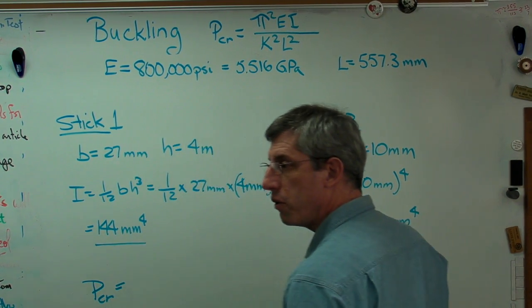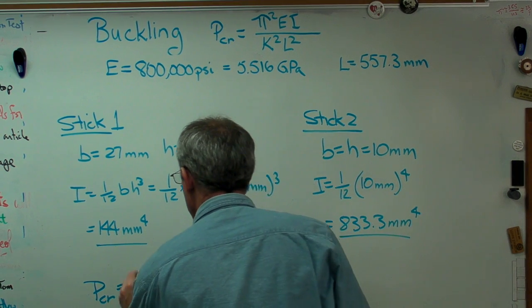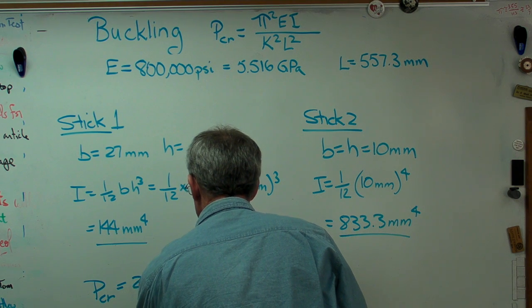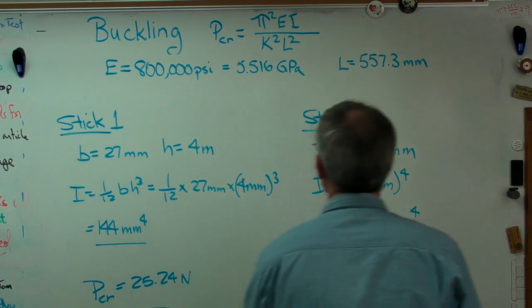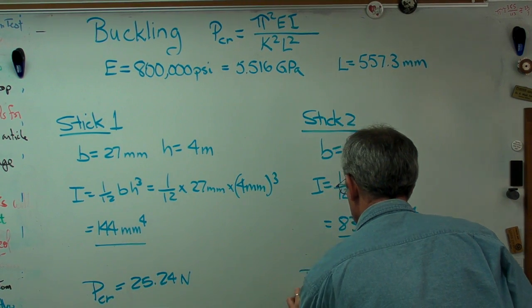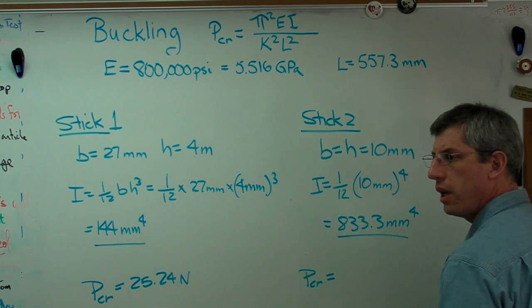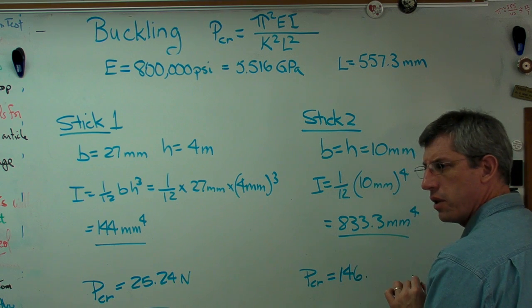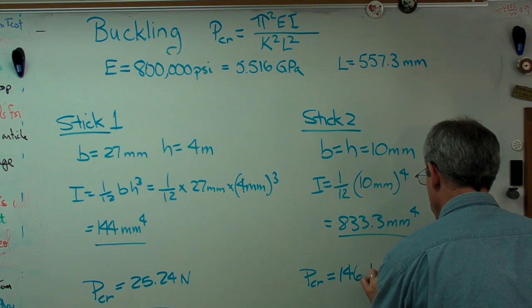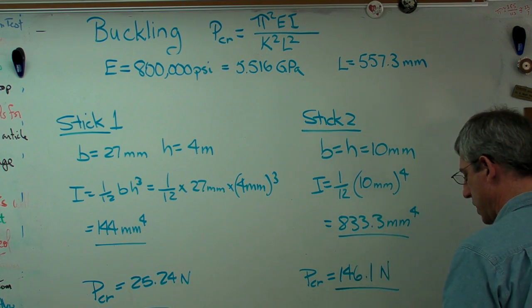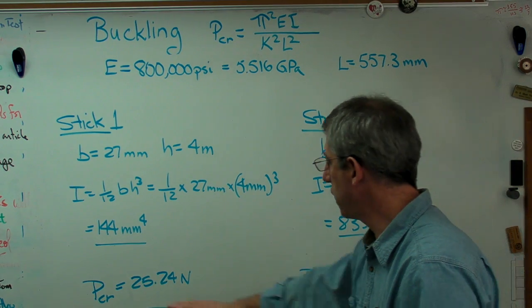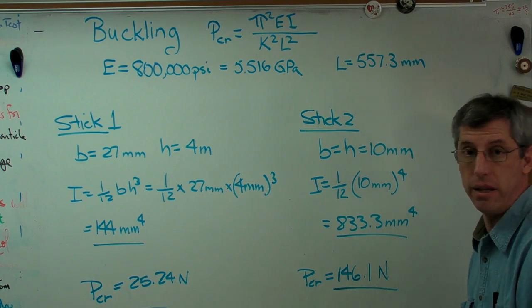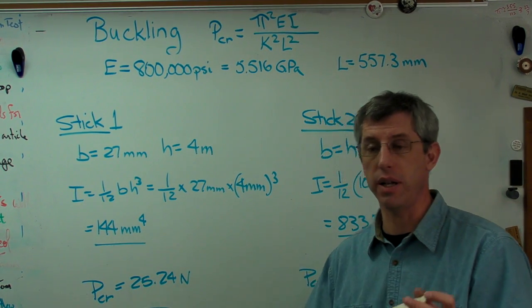Critical buckling load for this is calculated to be 25.24 newtons. And over here, the buckling load is calculated to be 146.1 newtons. Okay, or in English units, this turns out to be about 5.7, and this turns out to be 32.8. So, that makes sense.